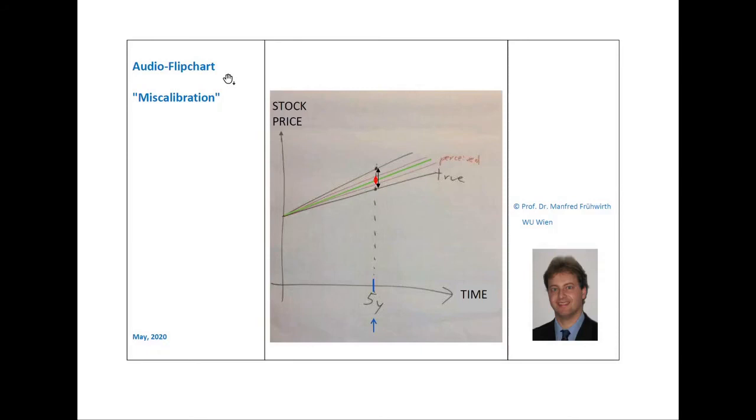Summing up, we saw in this audio flip chart that miscalibration makes people underestimate the risk of random variables, which means the risk of uncertain developments. So miscalibration results in the so-called risk bias of overconfidence. And this in turn makes them perceive and quote too small confidence intervals.